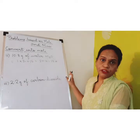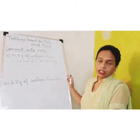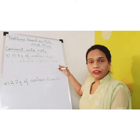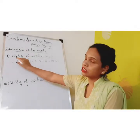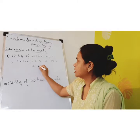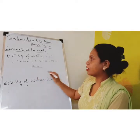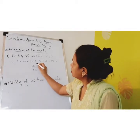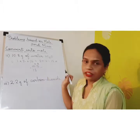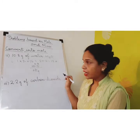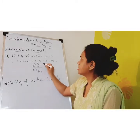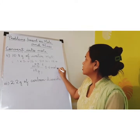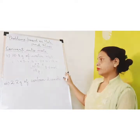Now we have to find out the number of moles. The easier way is to use the formula: given mass upon molar mass. Here the given mass is 10.8 grams, whereas the molar mass is 18. Solving this gives us 0.6 moles. This is the number of moles.